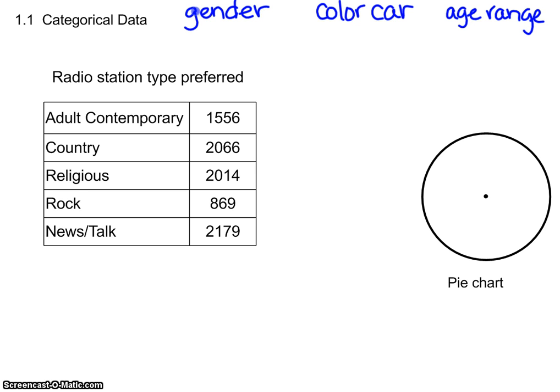With quantitative data, you're able to do algebraic operations, like find a mean. When we look at data, we always want to start by looking at some type of graph or plot so we can see what's going on.